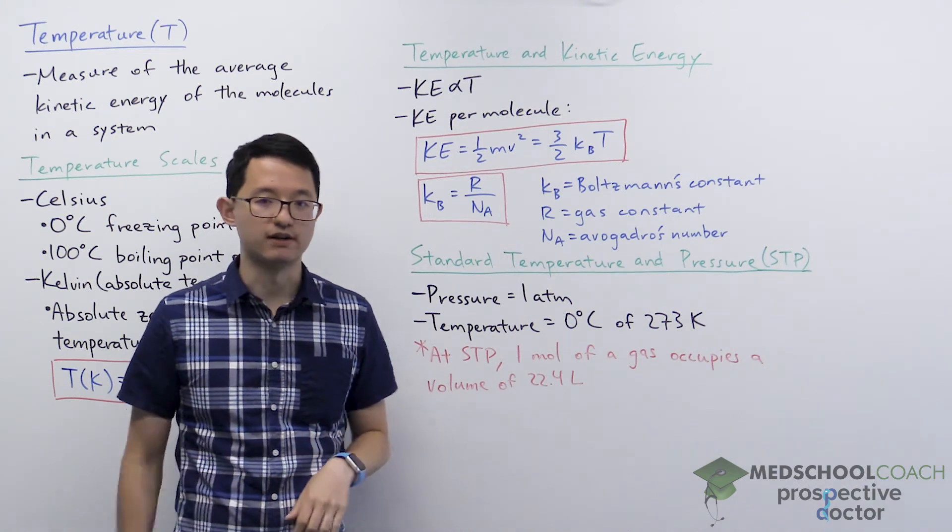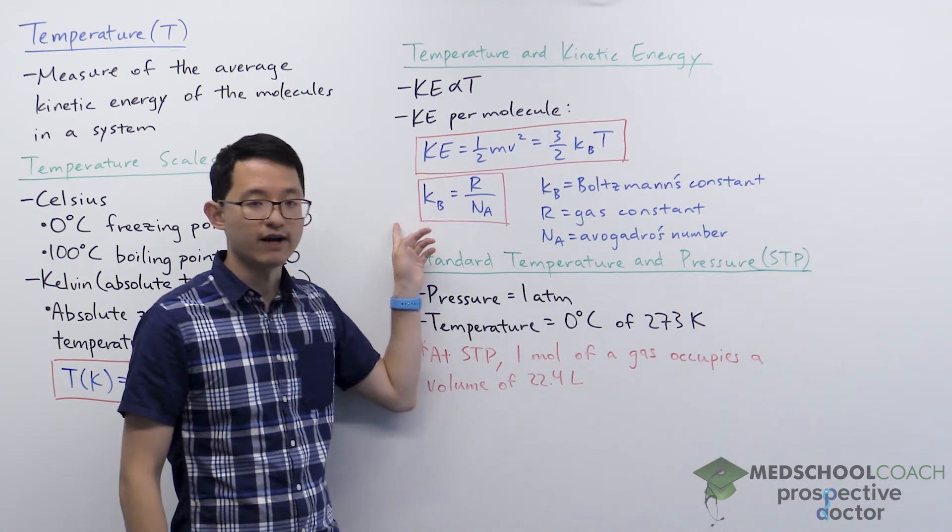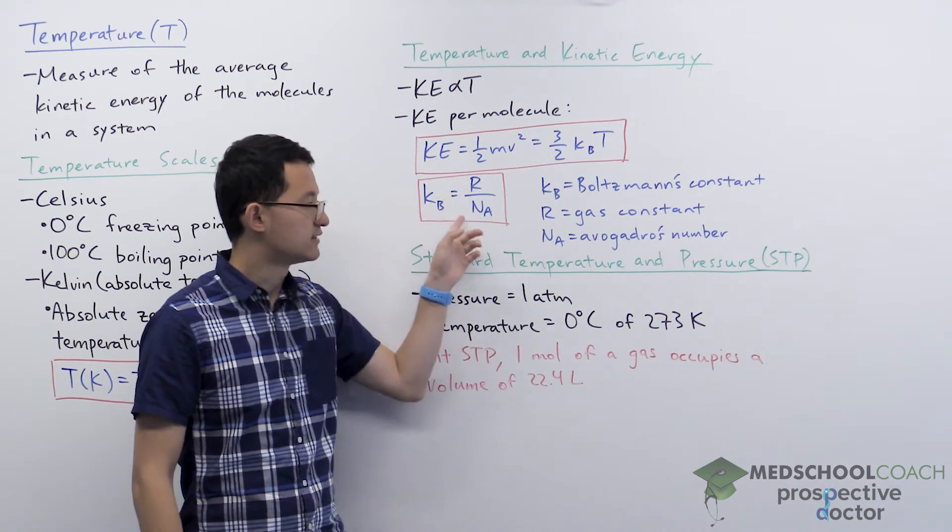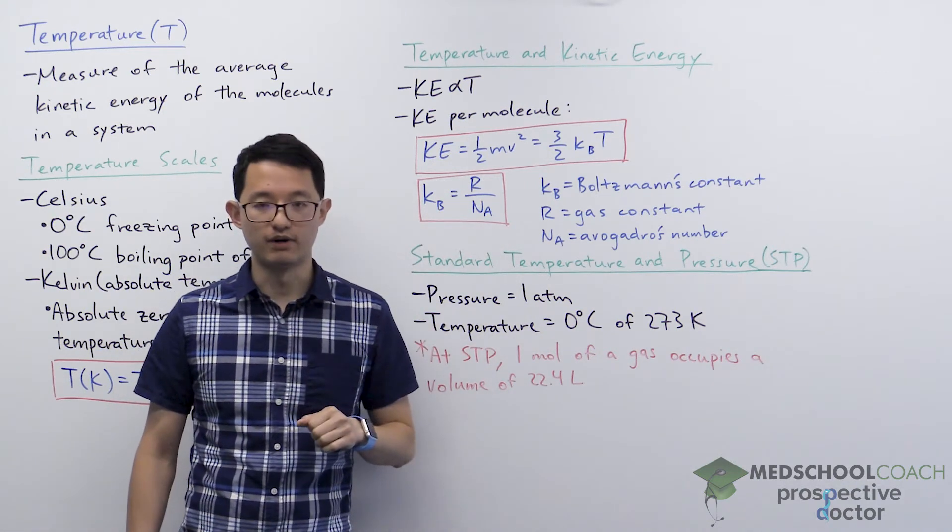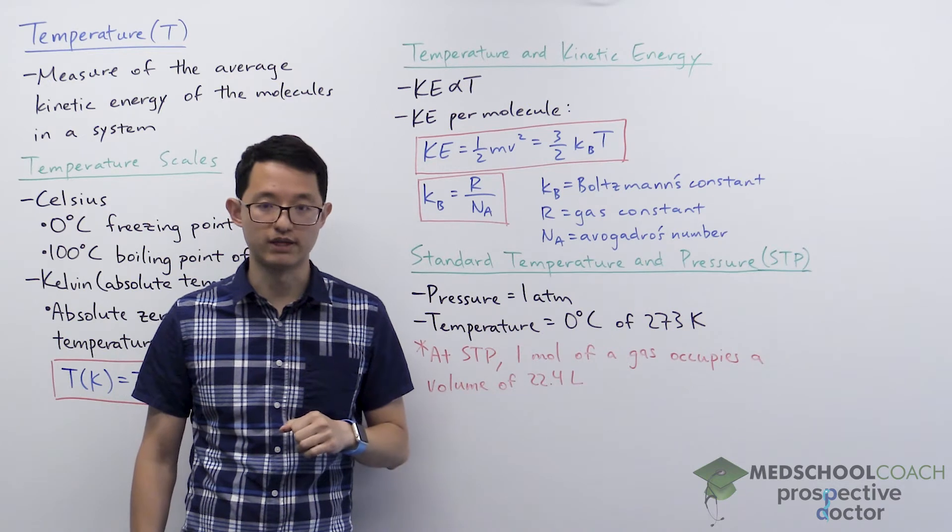Kb is the Boltzmann's constant and as you can see it's defined as the gas constant divided by Avogadro's number, six times 10 to the 23.